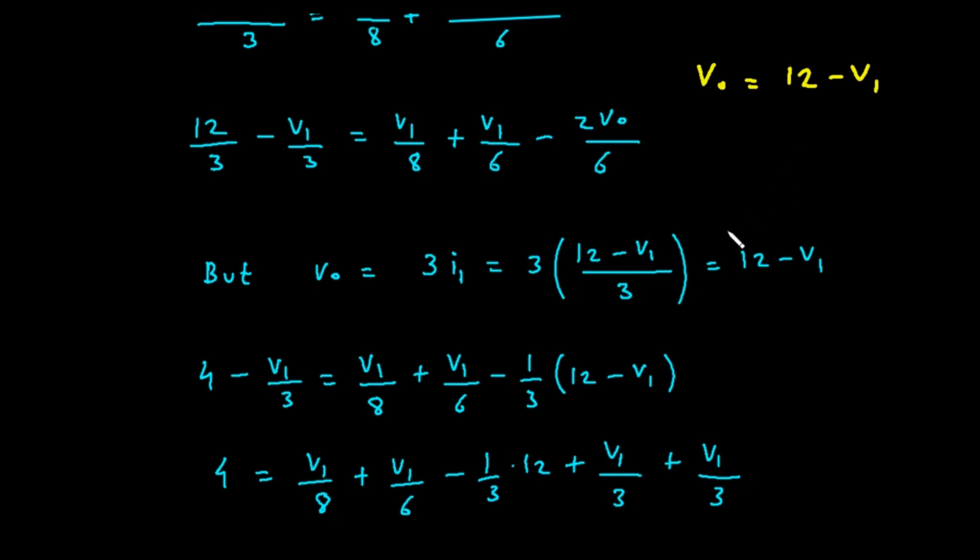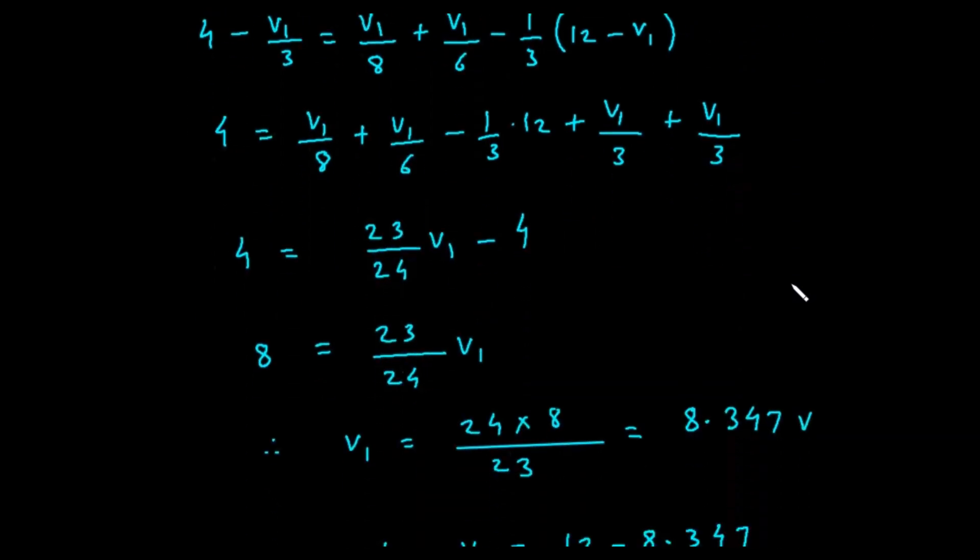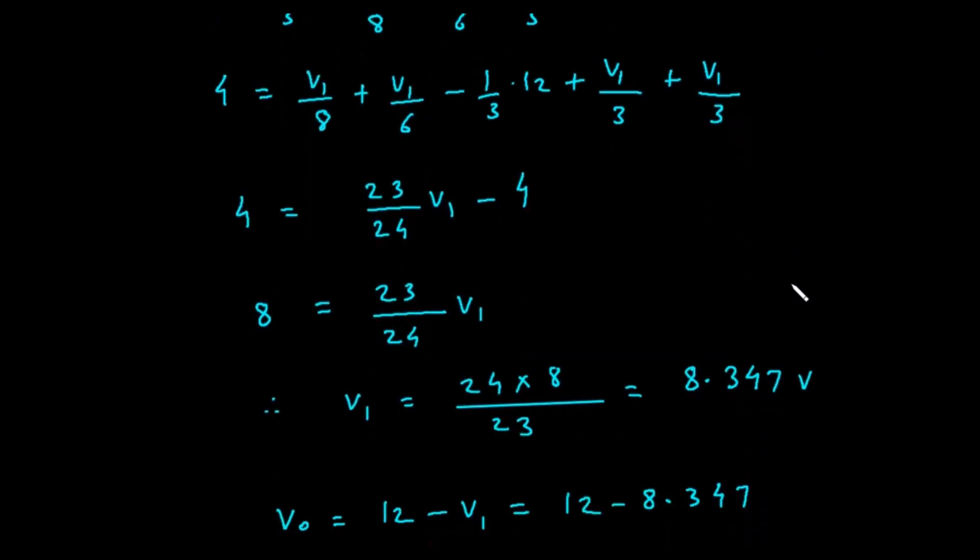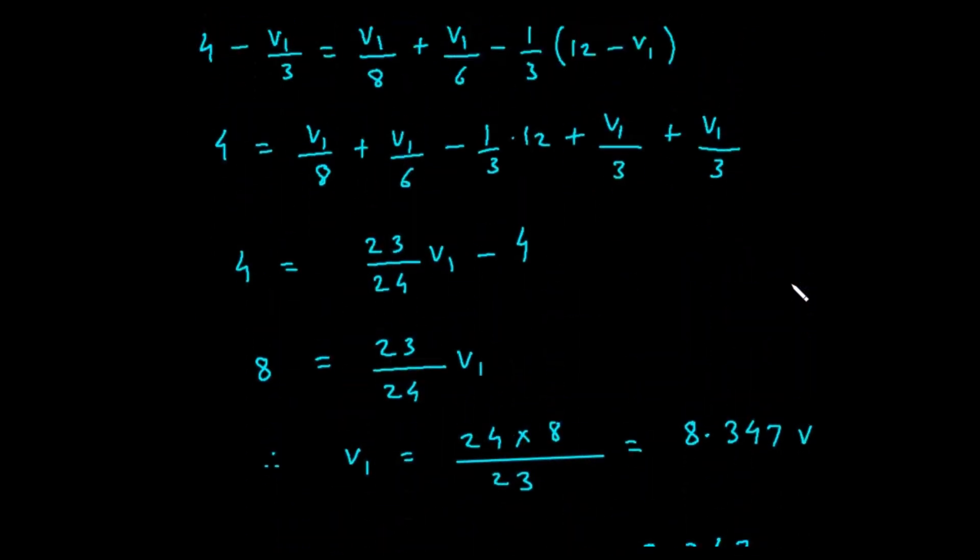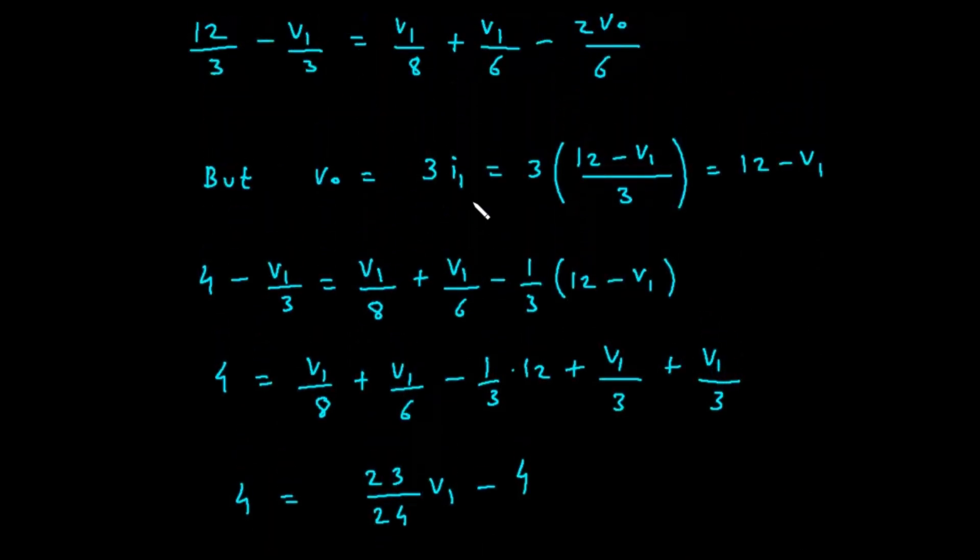The main equation is 12 minus V sub 1 over 3 equals V sub 1 over 8 plus V sub 1 minus 2 times V0 over 6. Let's split the fractions to make it easier to see. 4 minus V sub 1 over 3 equals V sub 1 over 8 plus V sub 1 over 6 minus V0 over 3. Now substitute V0 equals 12 minus V sub 1 into this equation. 4 minus V sub 1 over 3 equals V sub 1 over 8 plus V sub 1 over 6 minus 12 minus V sub 1 divided by 3.